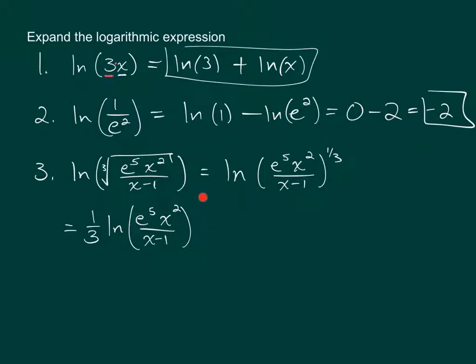Then, now that the exponent is gone, we can use the other properties to expand this log out into three separate logs. And I say three separate logs because there's a base e in the numerator, there's a base x in the numerator, and there's a base x minus 1 in the denominator. So I'm going to expand out this log, and I'm going to forget about the one-third just for a moment and expand this out.